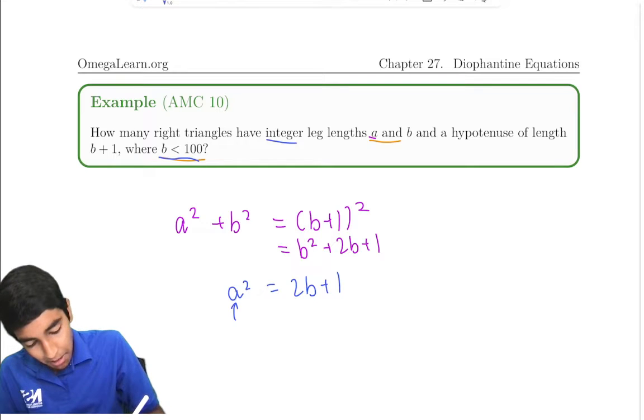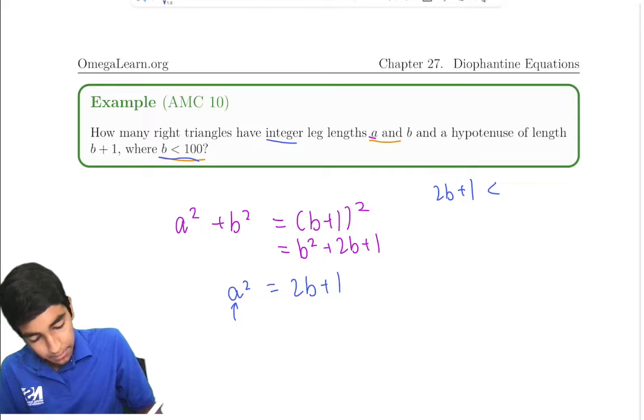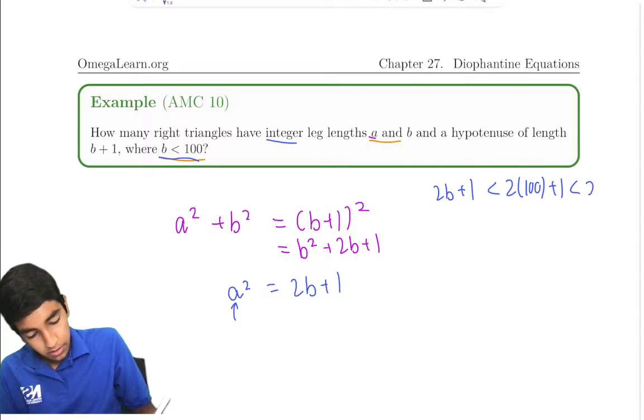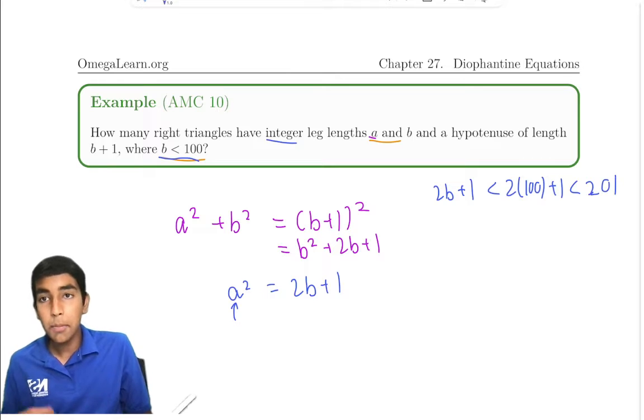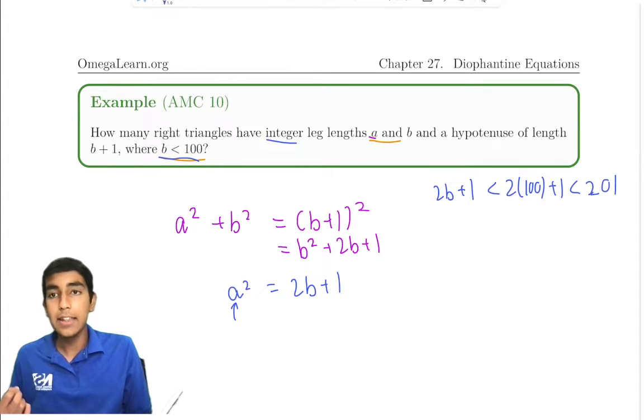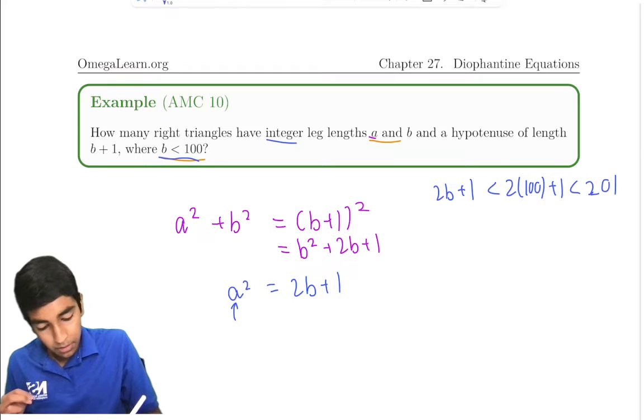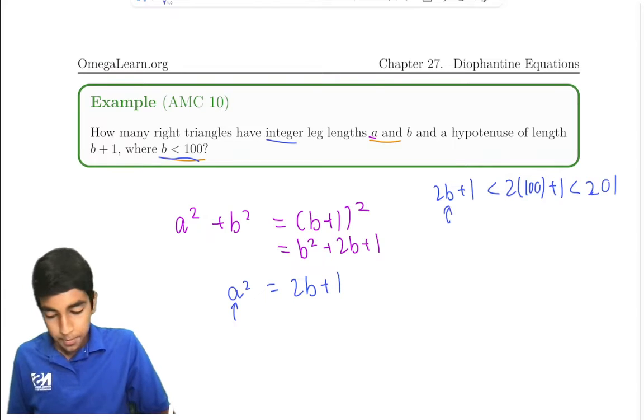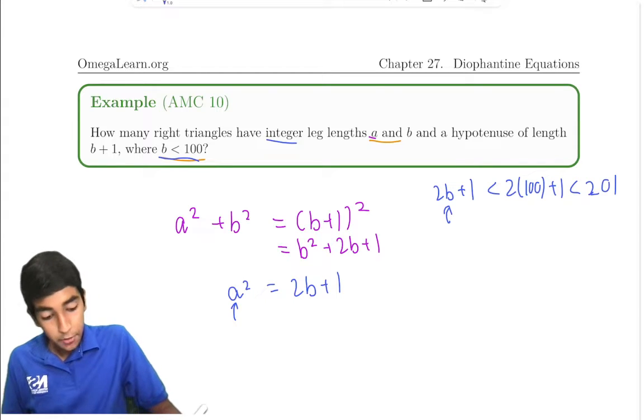If b is less than 100, then 2b + 1 will be less than 2(100) + 1, which is 201. The maximum possible value for b is 99. So the maximum possible value for 2b + 1 will be 199.